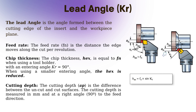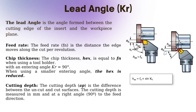When the lead angle is 90 degrees, the chip thickness value becomes equal to the feed rate value because the sine of 90 is 1. When the approach angle is 45 degrees, the cutting feed value becomes higher because the sine of 45 is 0.707.